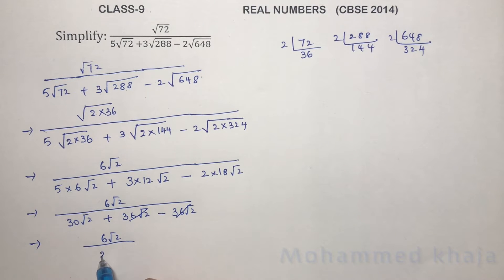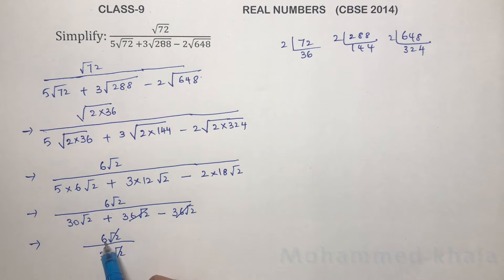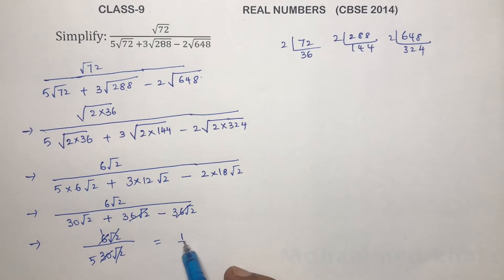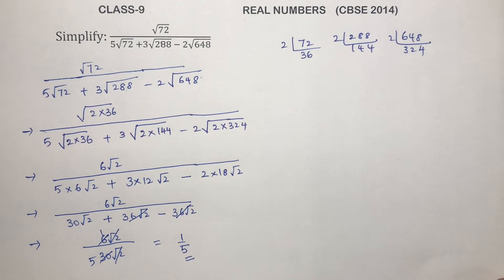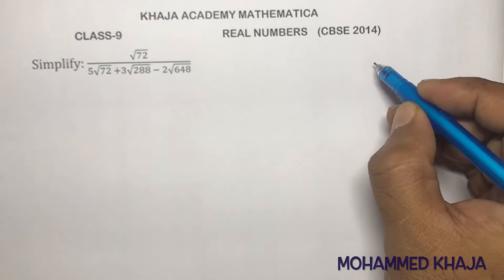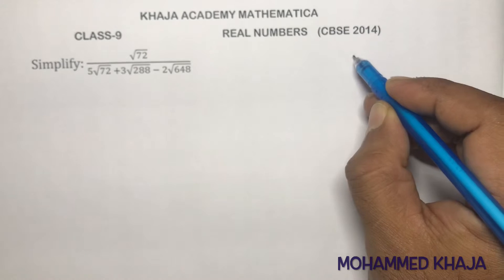So we are left with 6√2 divided by 30√2. The √2 and √2 cancel, giving 6/30, which simplifies to 1/5. So the answer for this problem is 1/5. Now let's do this in another method using full prime factorization. For 72: 2 × 36, 2 × 18.